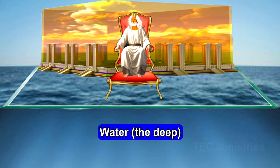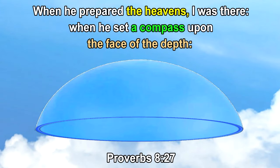Now let's find out how God attached his footstool, our earth, to his throne in heaven. First, we will move his kingdom up, so we can work with more of the water under his kingdom of heaven. Scripture says: when he prepared the heavens, I was there. When he set a compass upon the face of the depth — pay attention here. Highlighted in yellow, it says the heavens, plural, as in more than one.